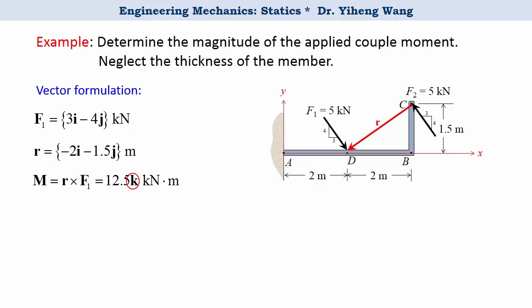The unit vector k indicates that the direction of this moment is along the positive k direction, perpendicular to the x-y plane pointing outwards. The magnitude of the couple moment is 12.5 kNm. It is positive, indicating that the rotational effect is counterclockwise within our x-y plane. That's the answer to this problem.